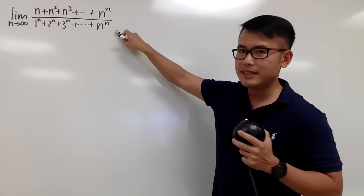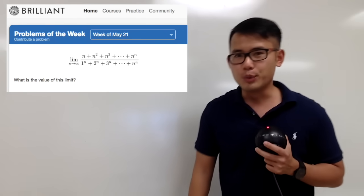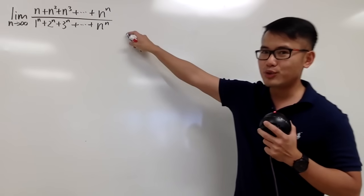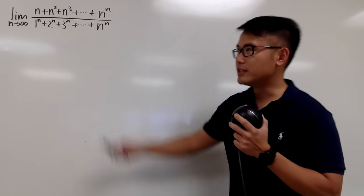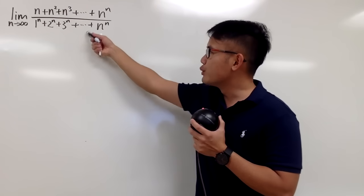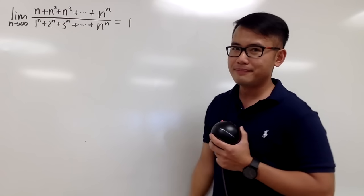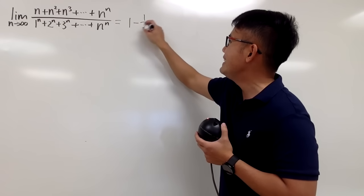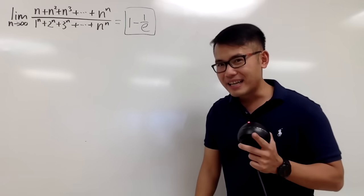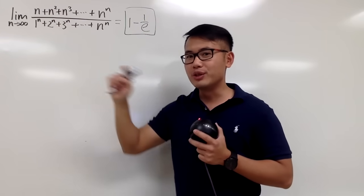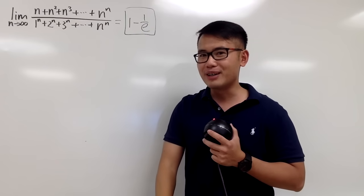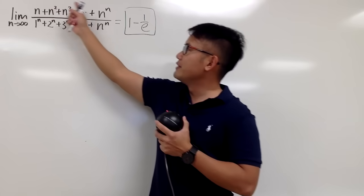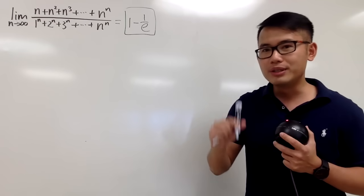Right now I'm going to show you guys how to solve this limit question. In fact, this is from one of the problem story sections. Be sure you pause the video and try this first. Hopefully you got a chance to try this. The answer to this is equal to 1 minus 1 over e. If you thought the answer was equal to just 1, because you saw we have n to the n on the top and n to the n on the bottom and just cancel them out — that's actually not correct. Especially with this bunch of stuff right in the front, we must do this carefully.